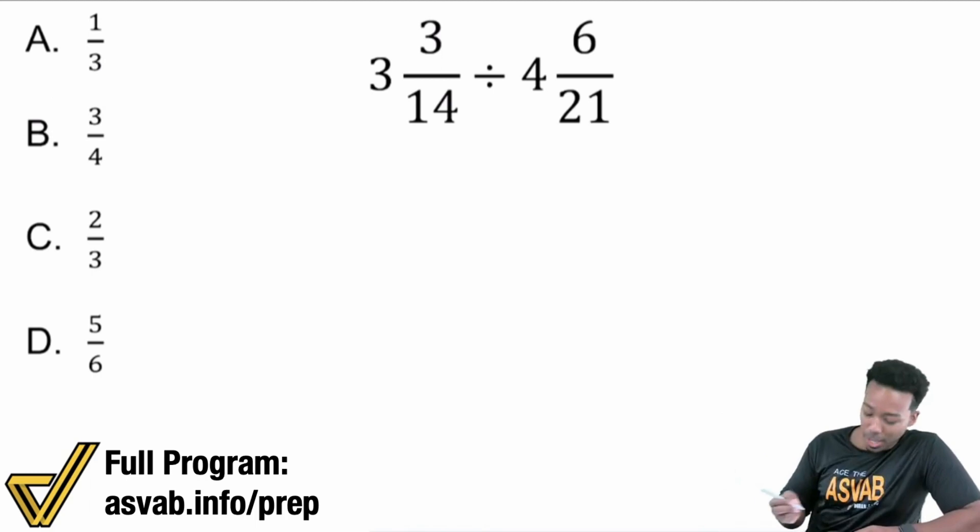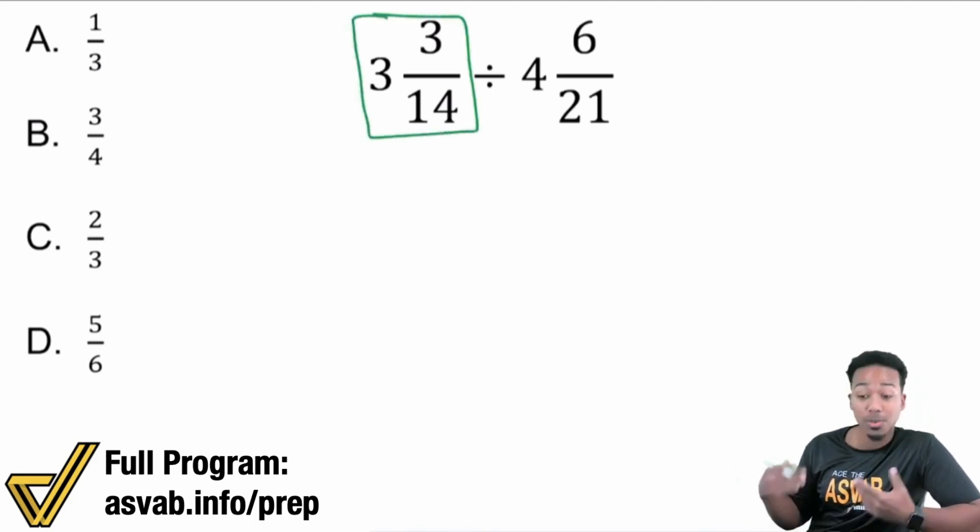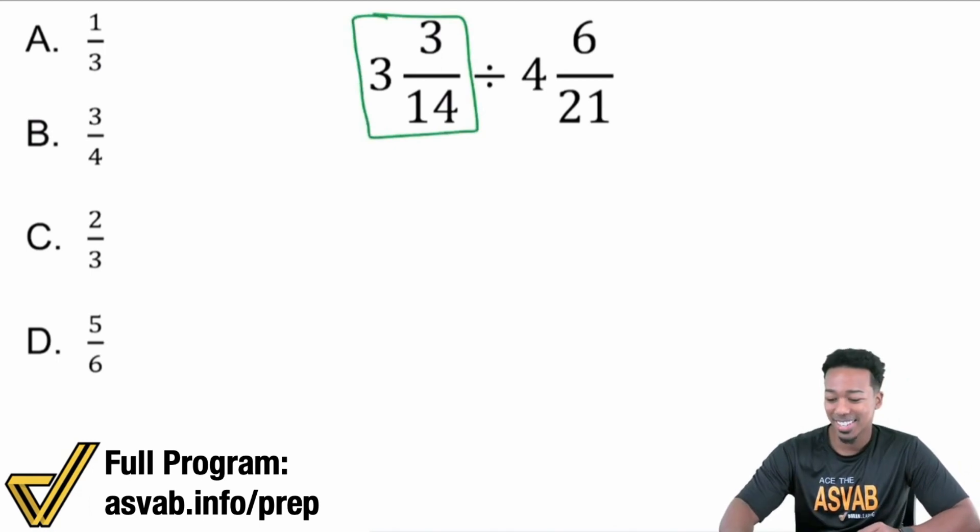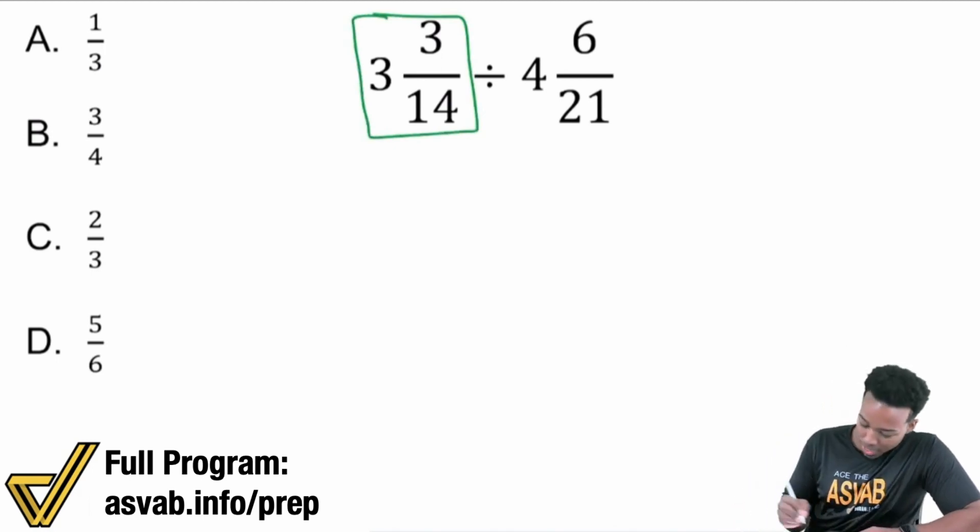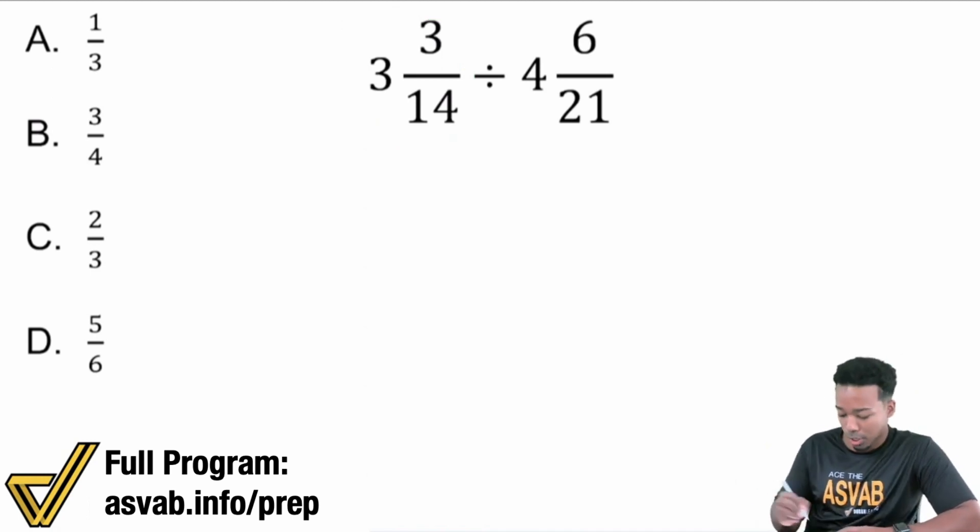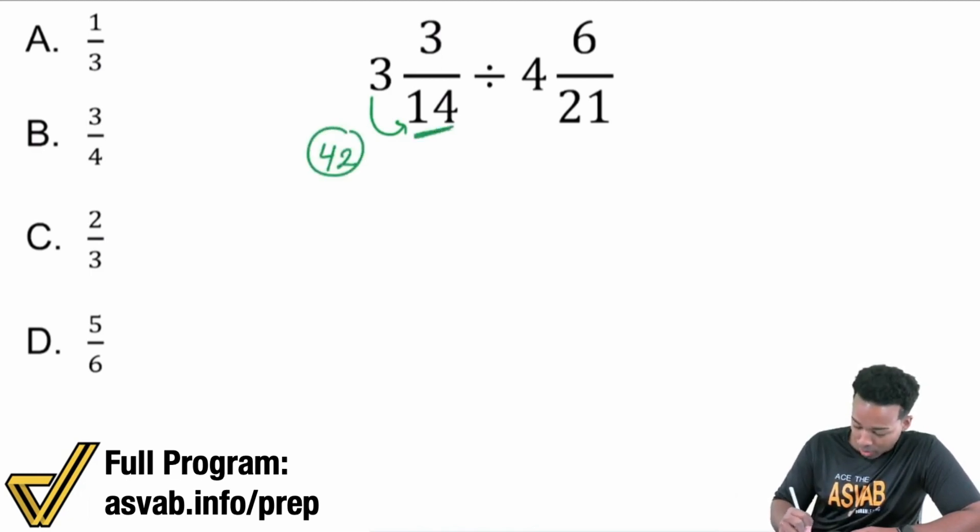So first and foremost, like we said, let's go ahead and convert these into improper fractions. So with that over here, three and three over 14. How do we do that? Well, remember what you're going to do is you take the whole number and you multiply it by the denominator. Three times 14, that's going to give you 42.